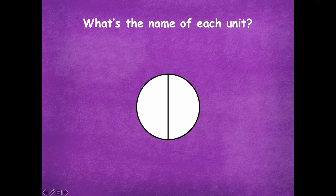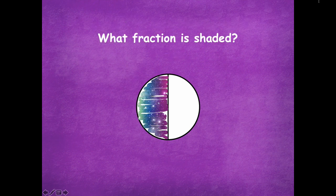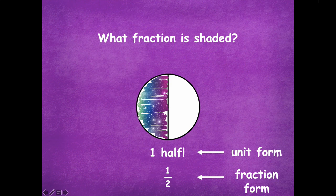What's the name of each unit? One half. Okay, so I shaded part of it. What fraction is shaded? One half. Awesome. You can also write one half numerically like this. So the number on the top represents in this example how many parts are shaded. The bottom number always represents the total number of equal parts. So here is written in unit form, and then here we have this written in fraction form. This is a unit fraction right here. A unit is one part of the fraction. That's what unit means.